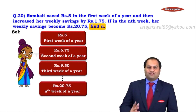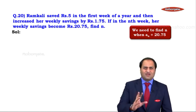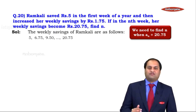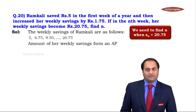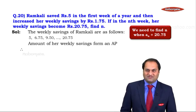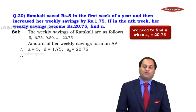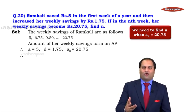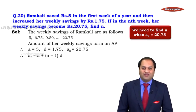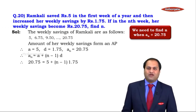We need to find n such that AN = 20.75. The weekly savings of Ramkali form an AP with a = 5, D = 1.75, and AN = 20.75. We apply the formula AN = a + (n − 1) × D. Substituting, we get: 20.75 = 5 + (n − 1) × 1.75.